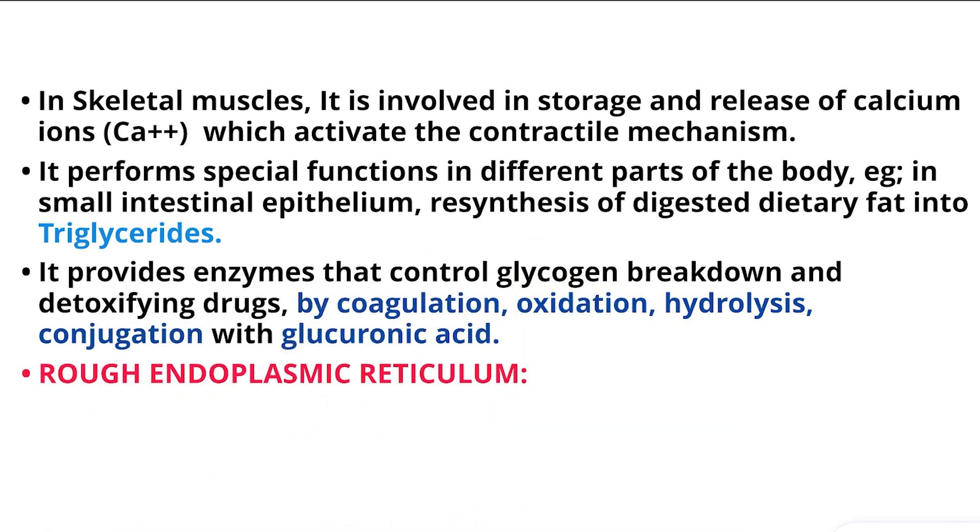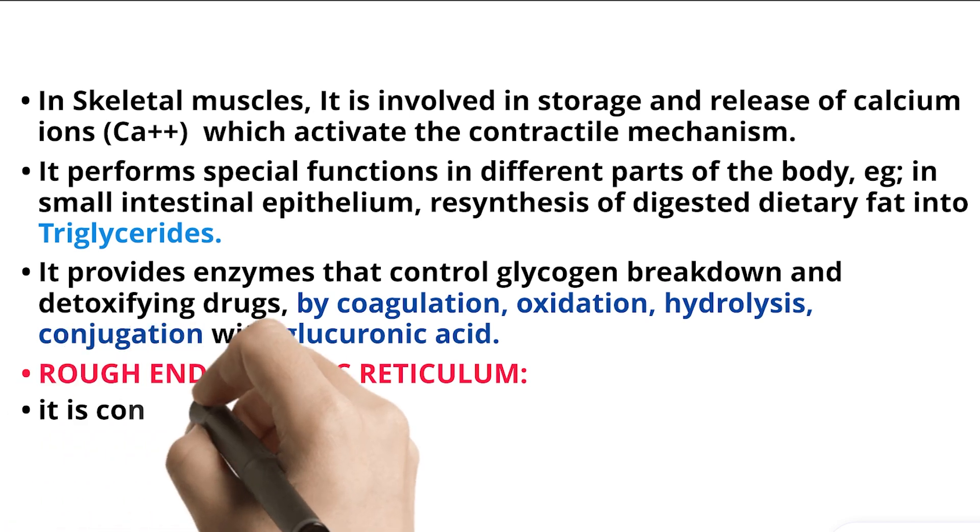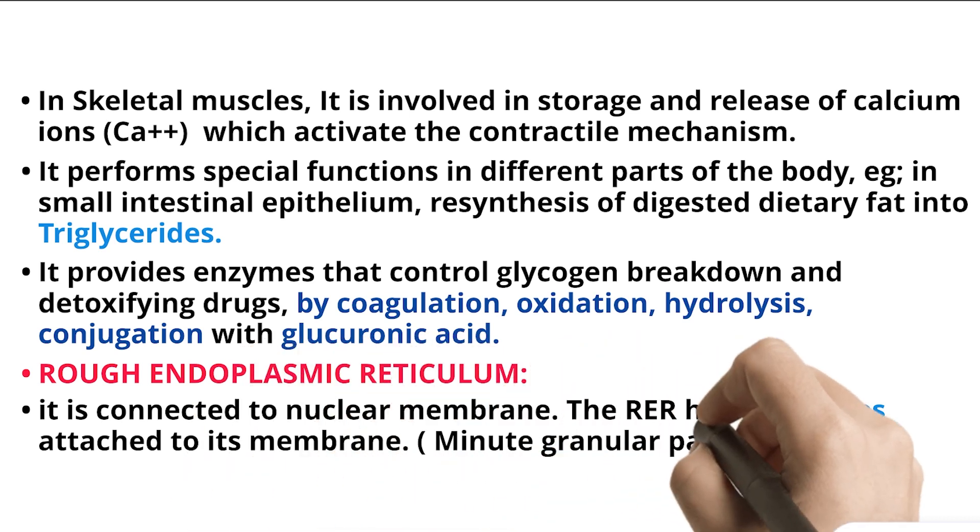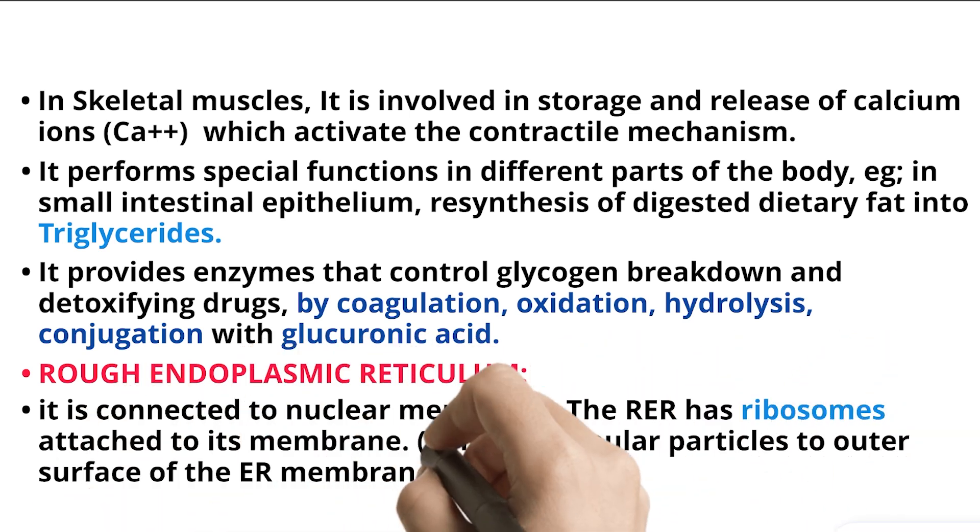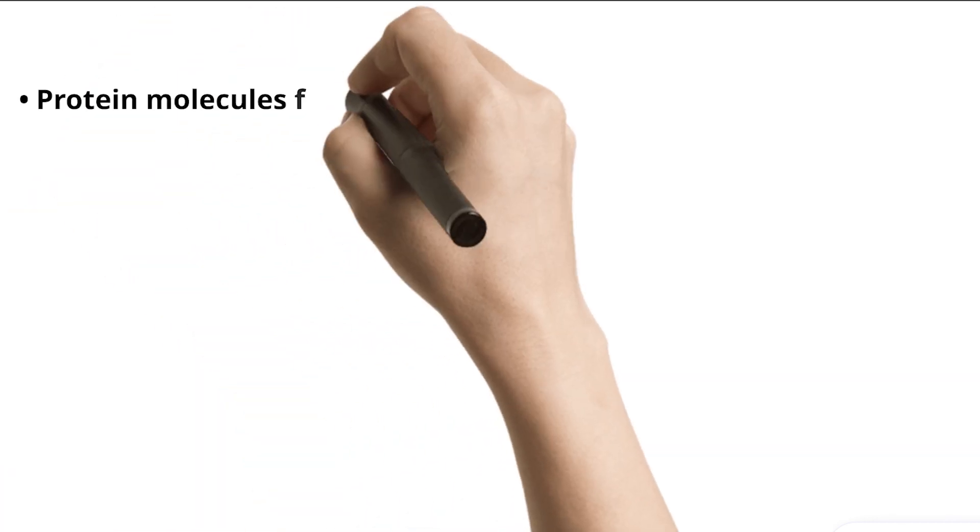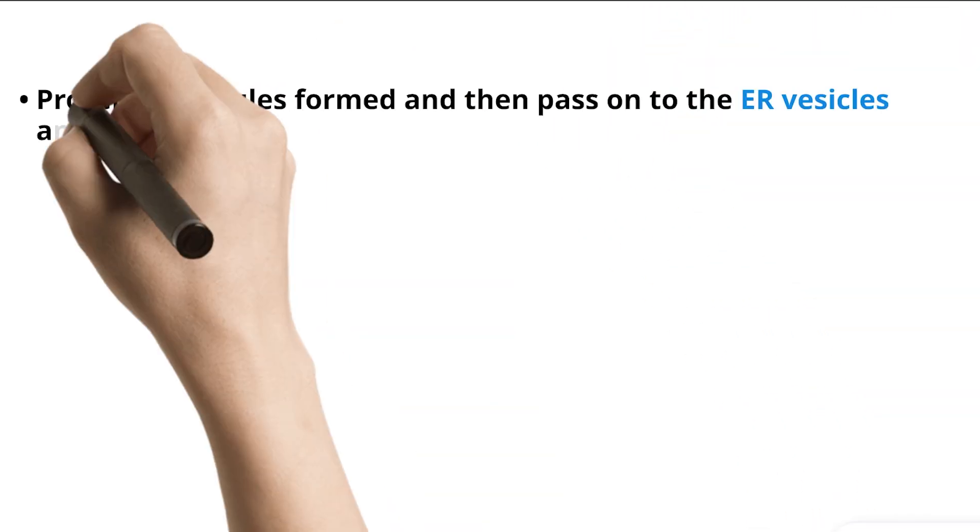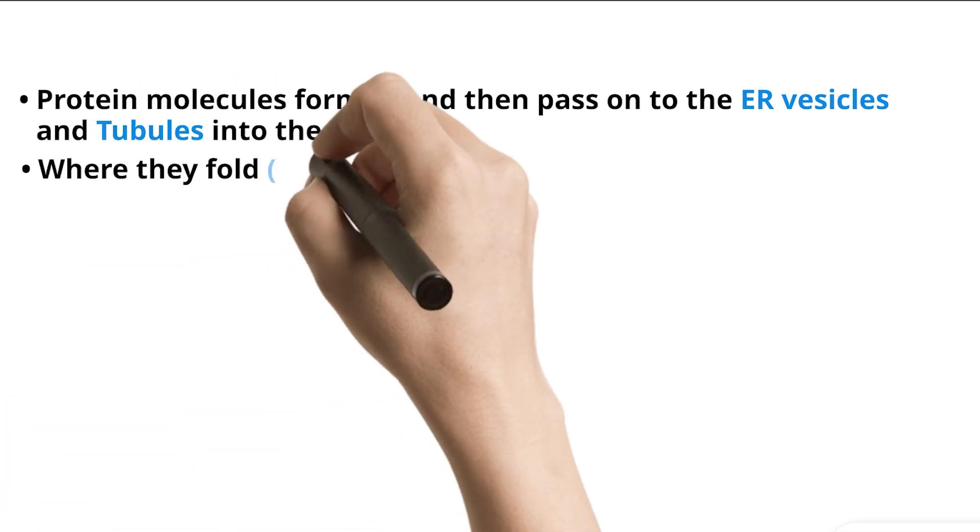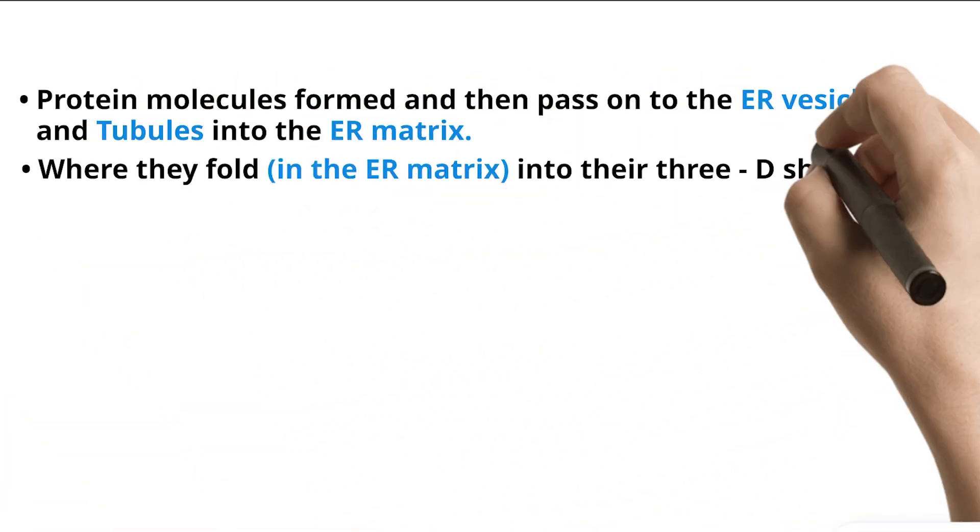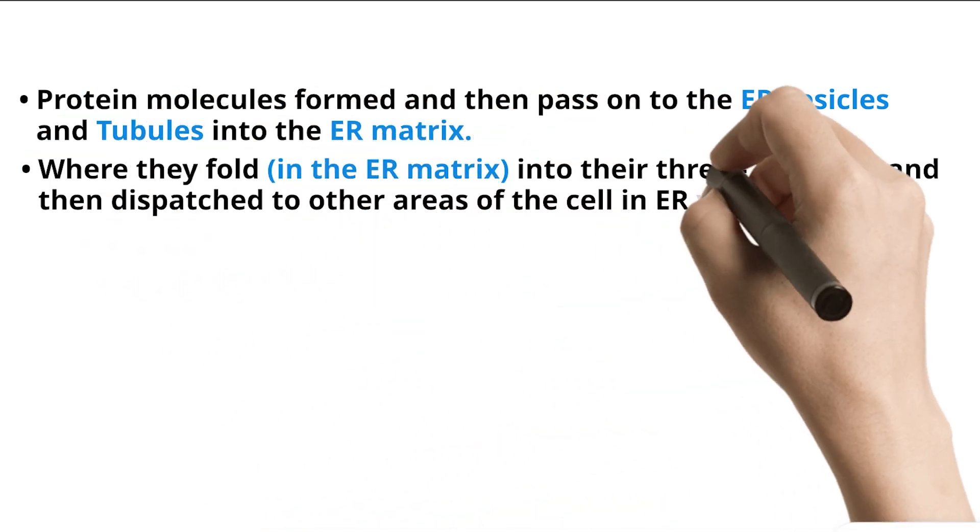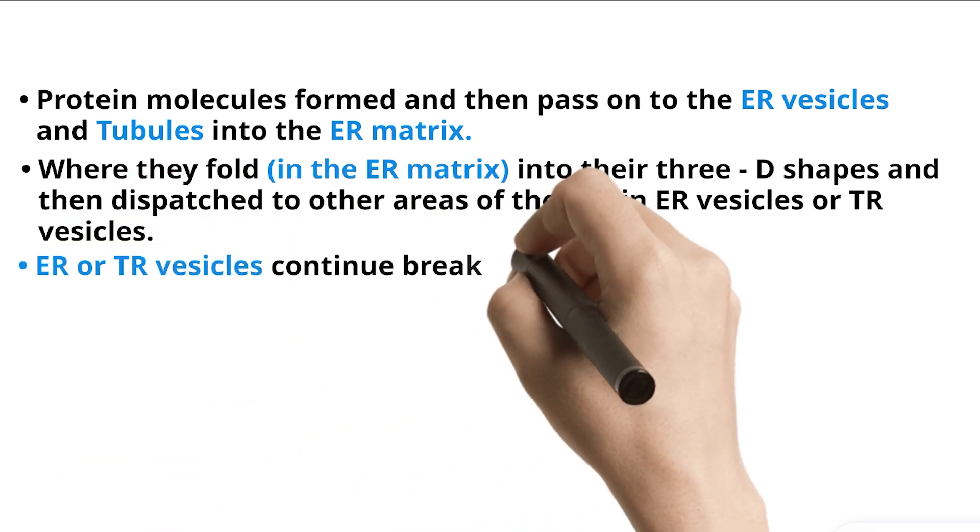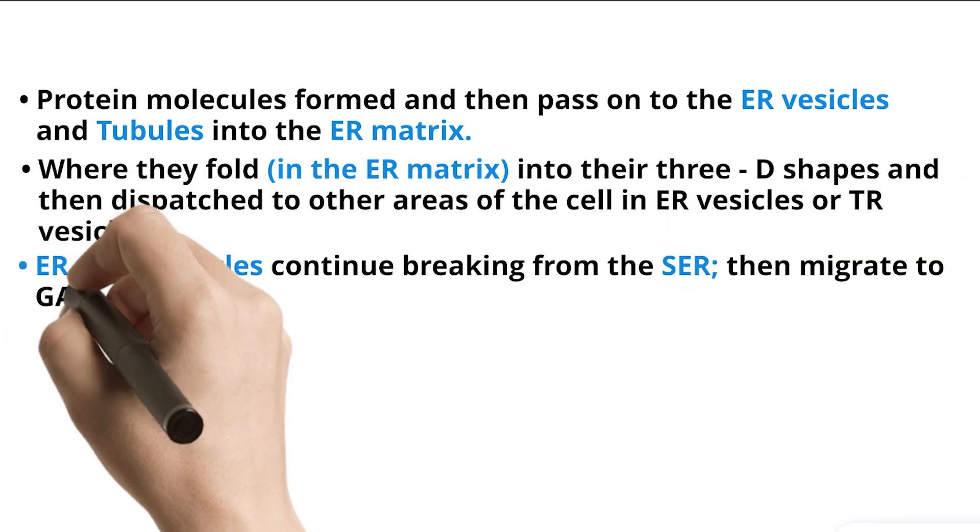Rough endoplasmic reticulum. It is connected to nuclear membrane. The RER has ribosomes attached to its membrane, minute granular particles to outer surface of the ER membrane. Protein molecules formed and then pass on to the ER vesicles and tubules into the ER matrix, where they fold in the ER matrix into their three D-shapes and then dispatched to other areas of the cell in ER vesicles or TR vesicles. ER or TR vesicles continue breaking from the S-ER, then migrate to G-A.